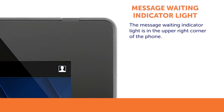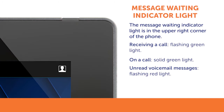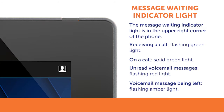In the upper right corner of the phone is the message waiting indicator light. A flashing green light indicates that you are receiving a call. A solid green light indicates that you are currently on a call. A flashing red light indicates that you have unread voicemail messages. A flashing amber light indicates that someone is leaving you a voicemail — if enabled, this is when you may screen the voicemail message.